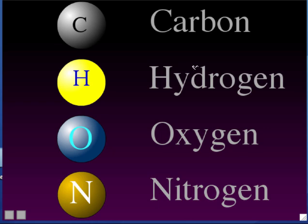The atomic symbol is always either one or two letters, and usually it's the first one or two letters of the atom's name. For carbon atoms, the atomic symbol is C. For hydrogen atoms, it's H. For oxygen, it's O. For nitrogen, it's N. For calcium, the atomic symbol is Ca, because those are the first two letters.